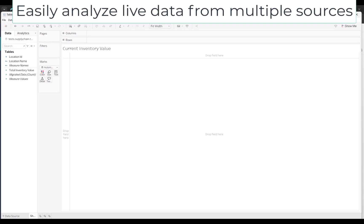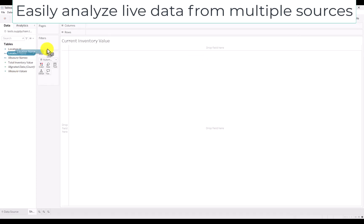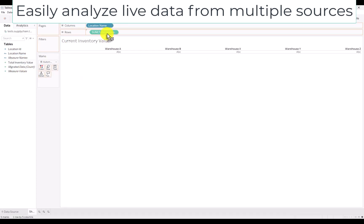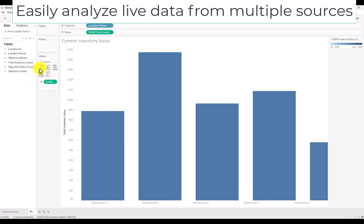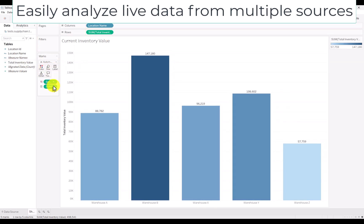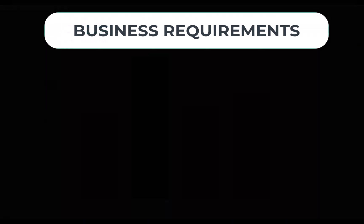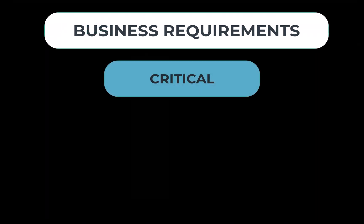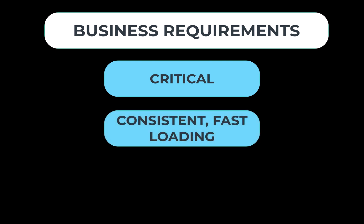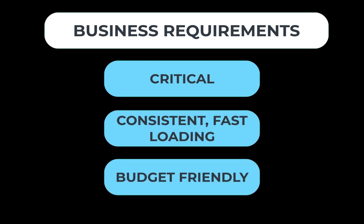We'll put the location names on the x-axis and the inventory value on the y-axis. To make it more readable, we will add gradient color based on the inventory value and labels for each of the location's total value. This dashboard looks great and is connected to our live data. However, since this will be a heavily used executive dashboard, we need to ensure that this dashboard is as fast as possible without sacrificing our live connection.